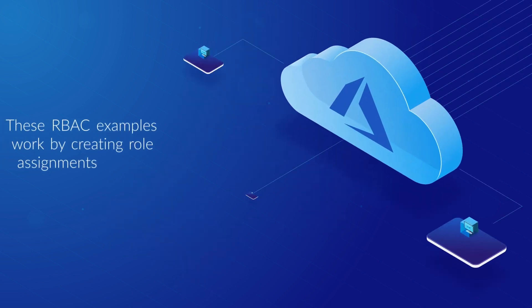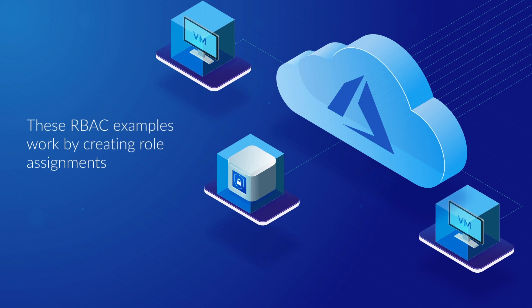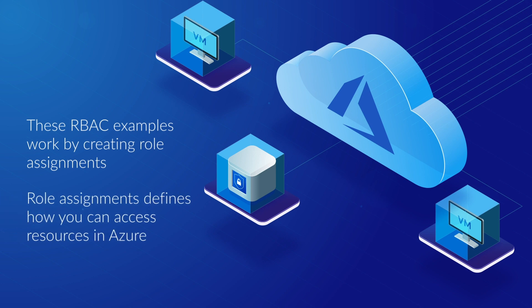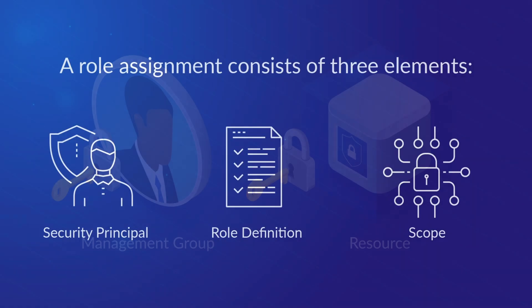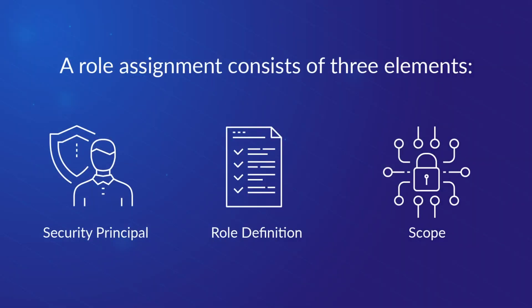Making these RBAC examples work is by creating role assignments. Role assignments define how you can access resources in Azure. This can be at the management group level and all the way down to the resource itself. A role assignment consists of three elements: the security principal, the role definition, and the scope you apply it to.